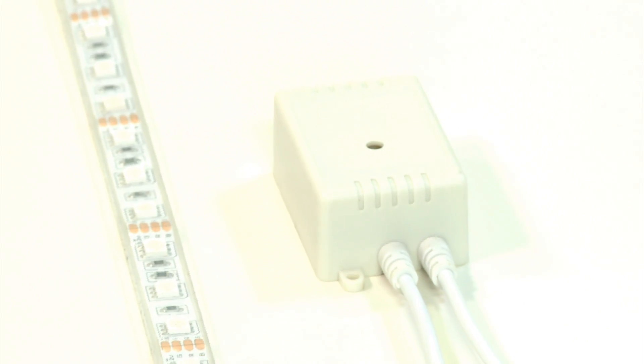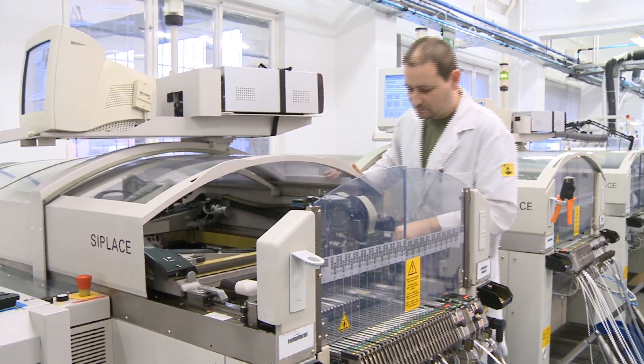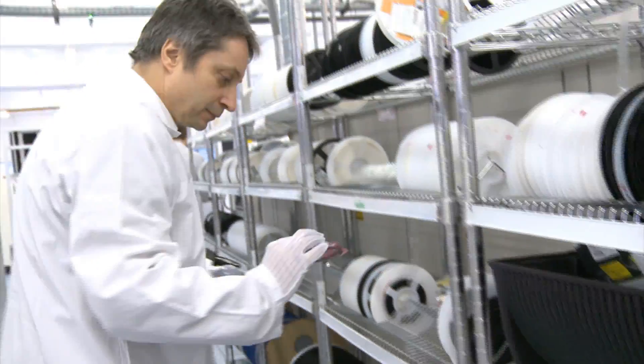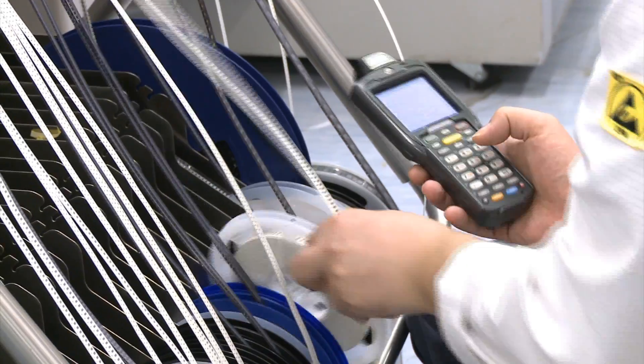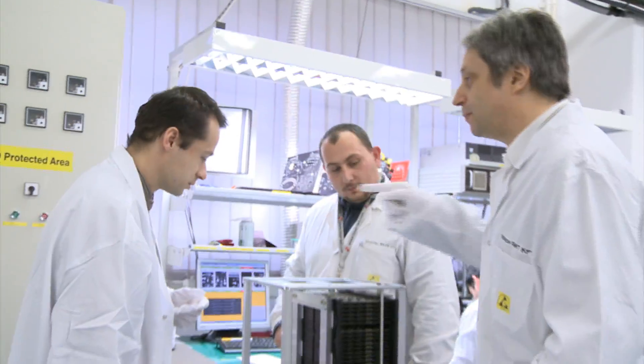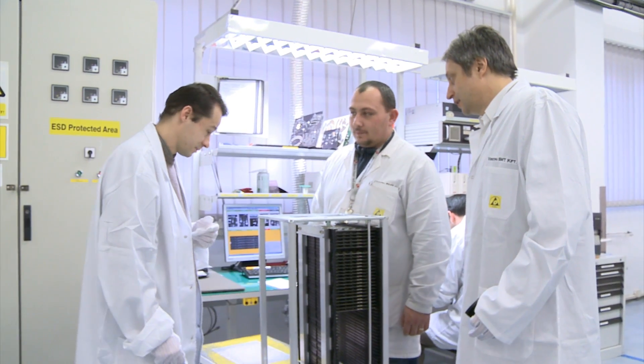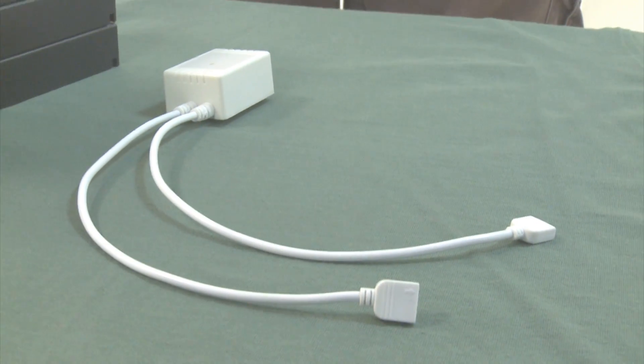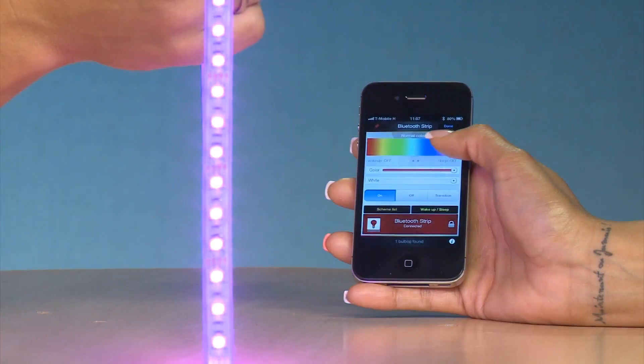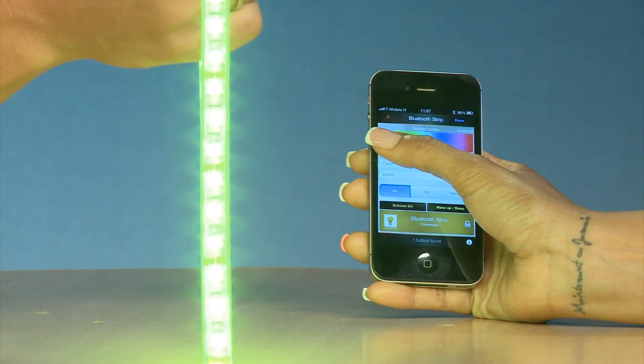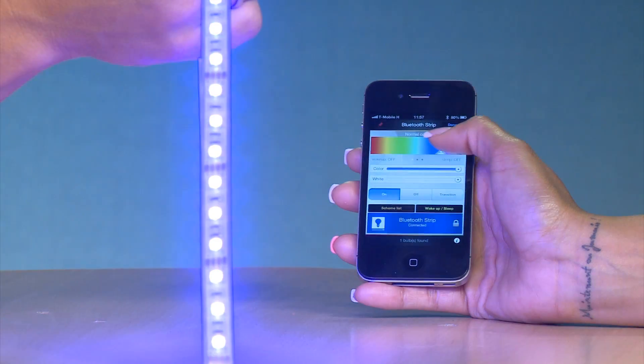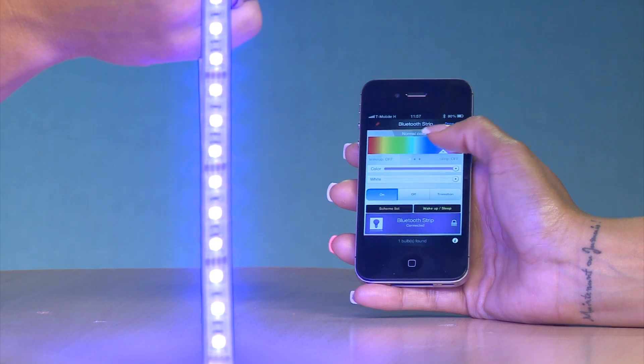Chameleon uses the cutting edge Bluetooth smart technology which supports very fast connectivity with very low power consumption. The controller has been thoroughly tested and debugged. You will own the world's first LED strip that can create over one million colors from the control of your Apple iPhone, iPad, and later from your Android device.